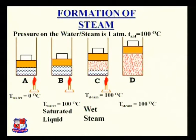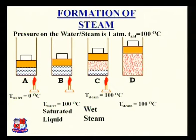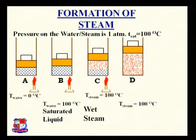During the phase transformation process, water or liquid is converted into the gaseous or vapor state. During this phase transformation, the temperature of the substance remains constant. At state D, 100% of the water is converted into steam, and that steam is known as dry steam or dry and saturated steam.